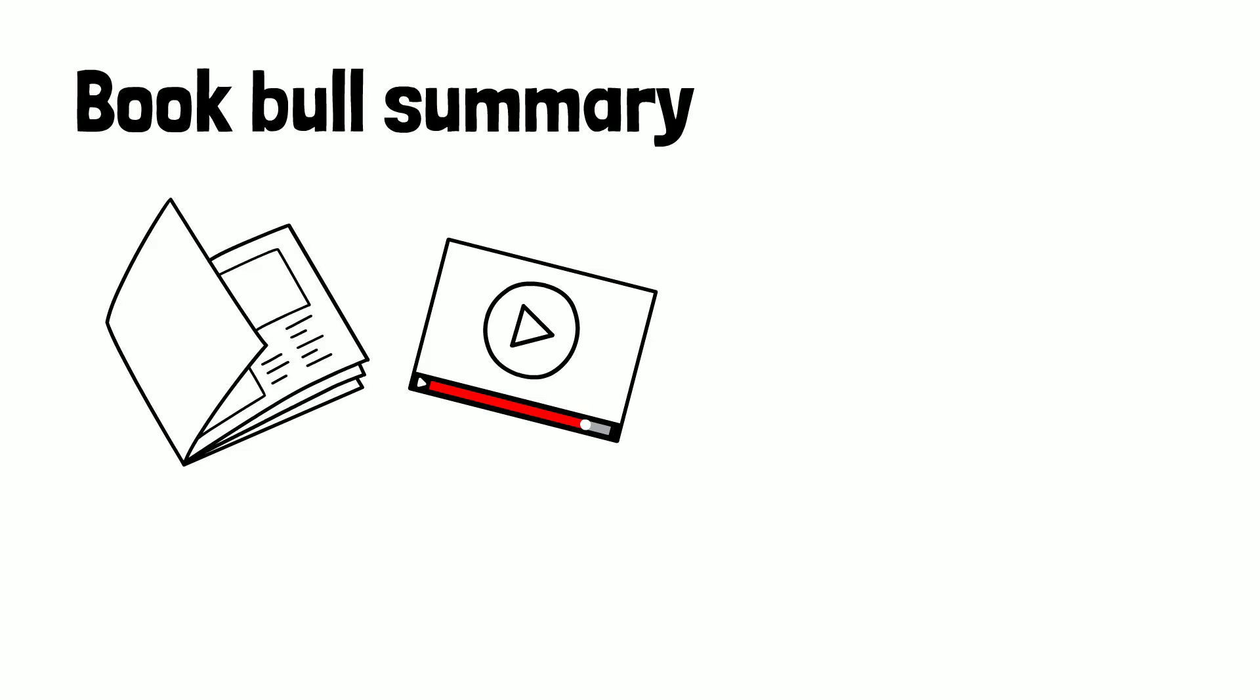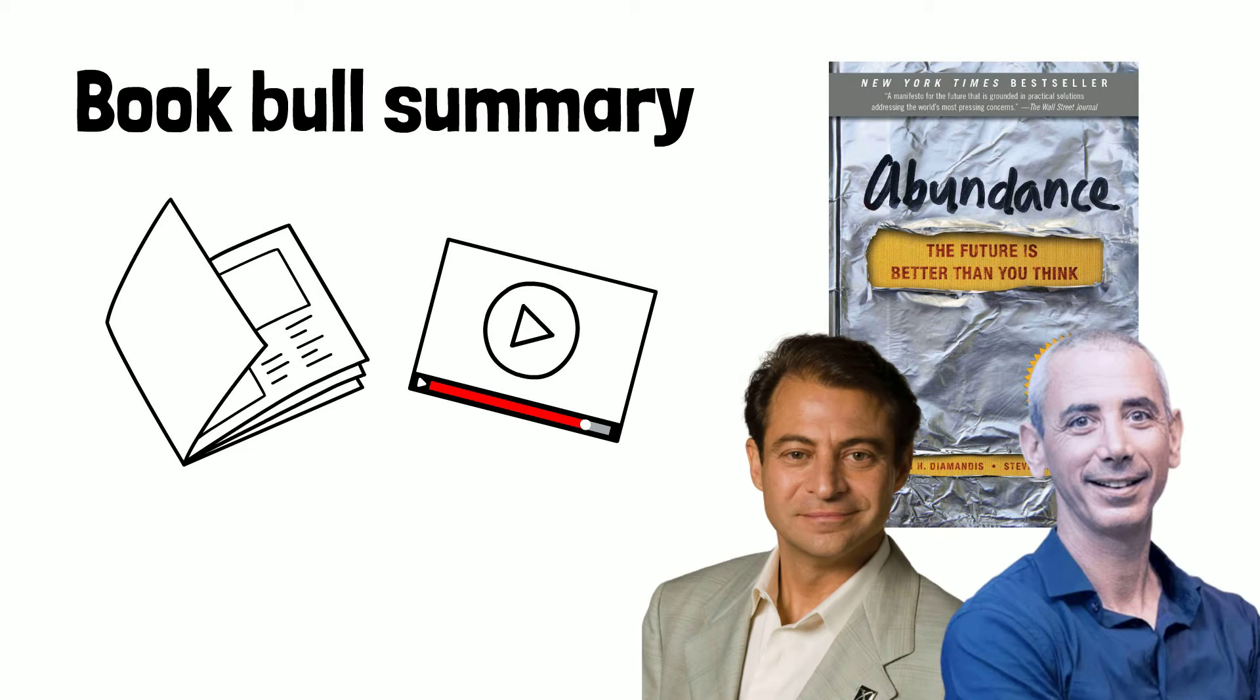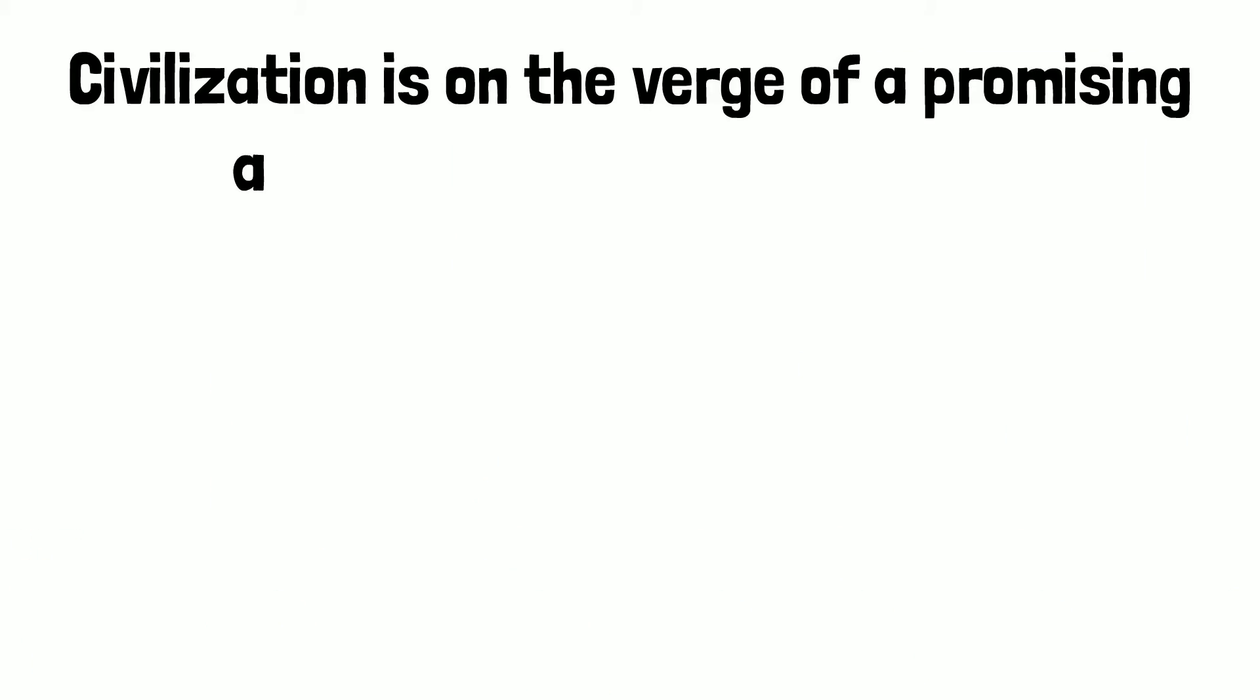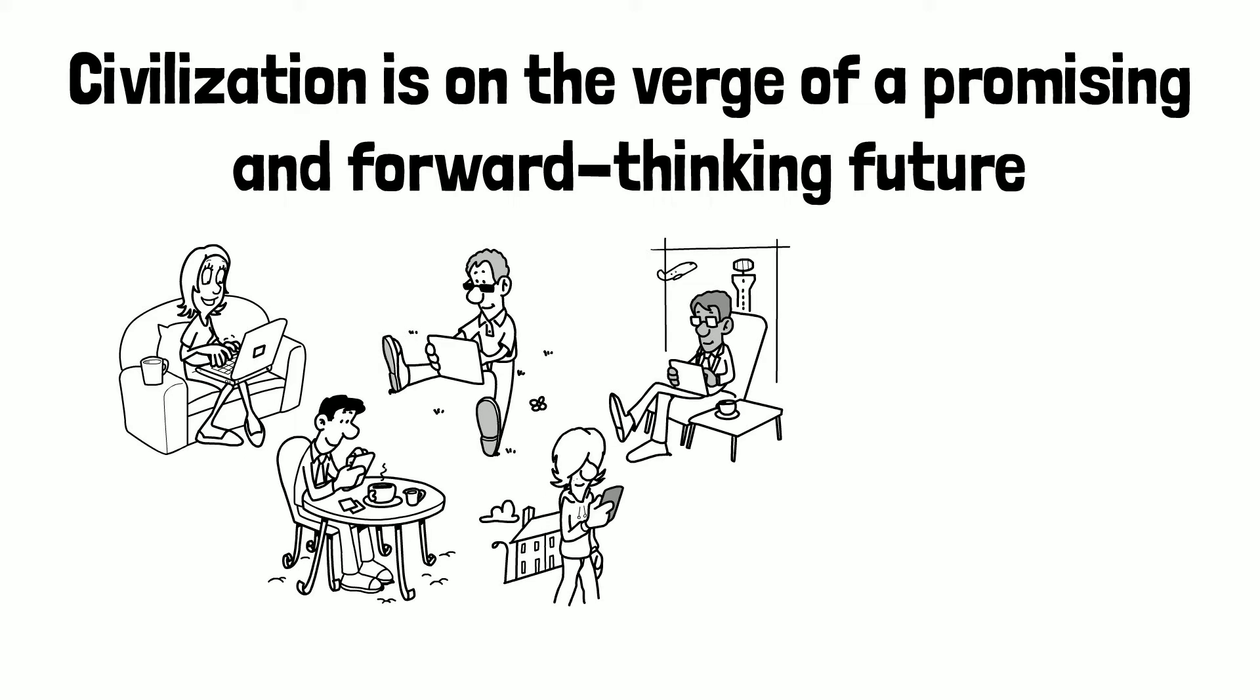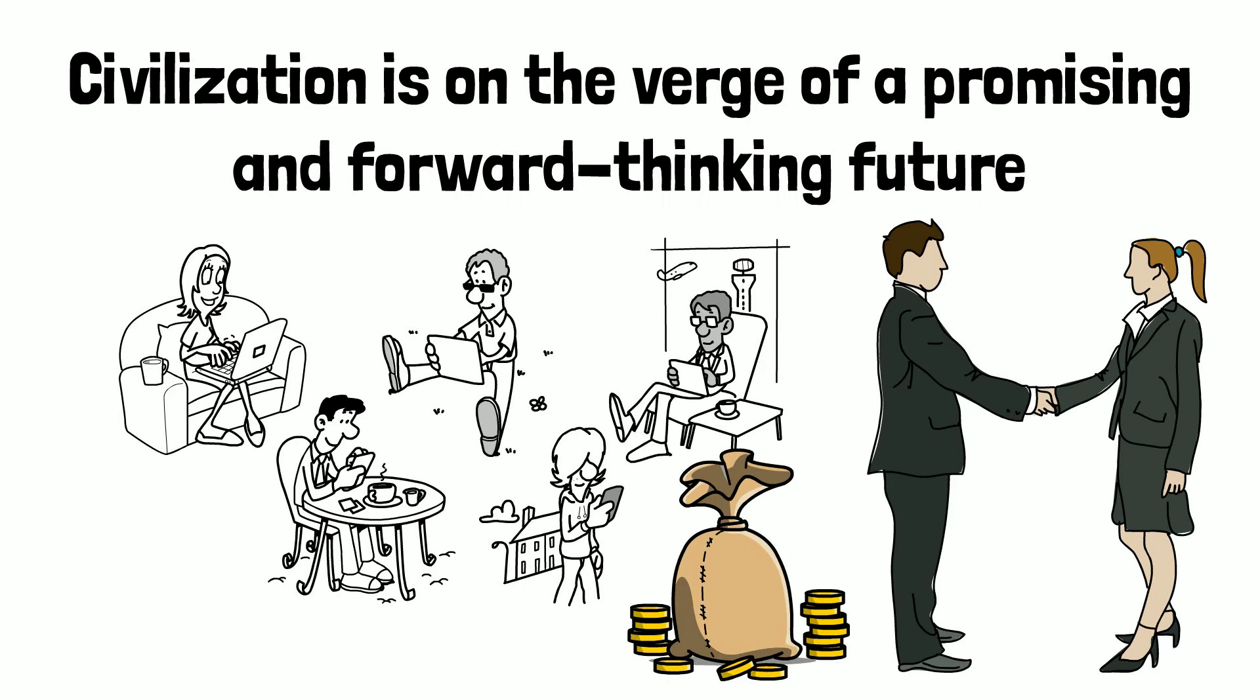This is a bookable summary of the book Abundance by Peter H. Diamandis and Stephen Kotler. Civilization is on the verge of a promising and forward-thinking future. Changes in the technological, business, and economic spheres will improve societies all over the world. In watching this video, you'll find exactly what these changes are, some of which are less obvious than others.